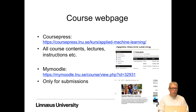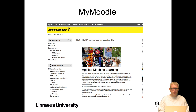We have two course web pages. We have the course press page containing all course contents, lectures, instructions, recorded lectures, etc., and My Moodle which we only use for submissions. This is where you submit your assignments. You should automatically be added to My Moodle when you are accepted to the course, and if you scroll down on the page you'll see submission links.